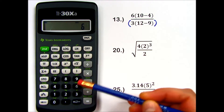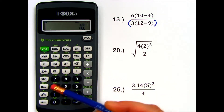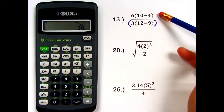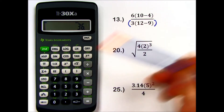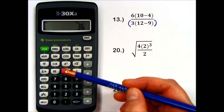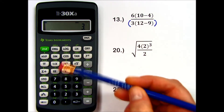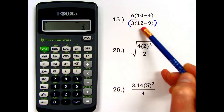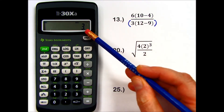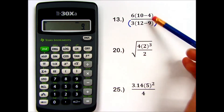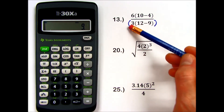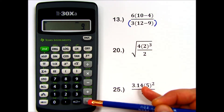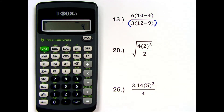I have 6 times parenthesis 10 minus 4. Close those parentheses and press equals — I see what my entire numerator equals. Then I will divide by the denominator and I have parenthesis 3 times parenthesis 12 minus 9. When I close these inner parentheses, I'm given the result of 12 minus 9. Close the outer parentheses — I'm given the value of this entire denominator. Then I press equals, and my calculator is waiting to perform the division until the end. Equals 4, and that's my answer.